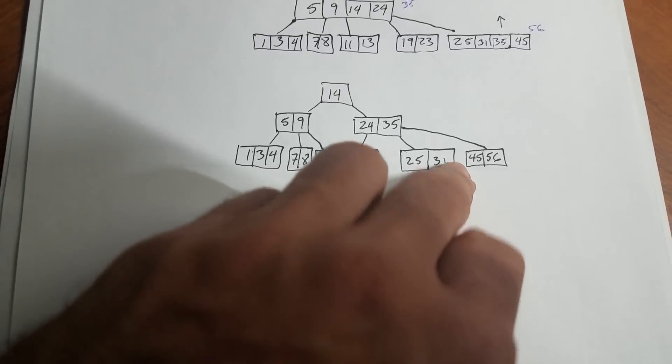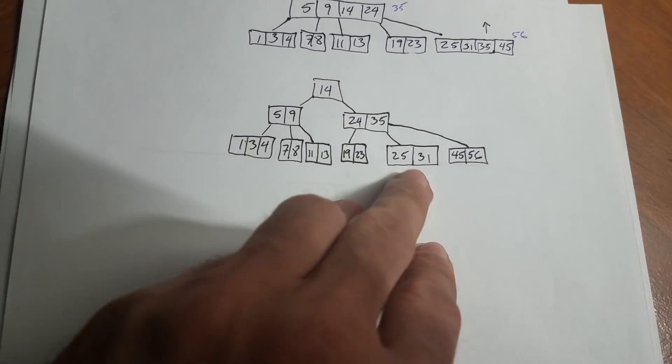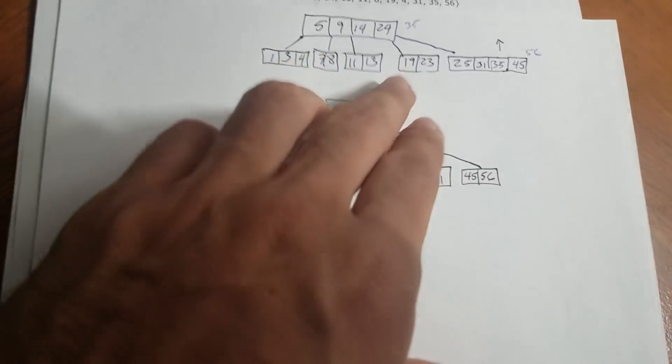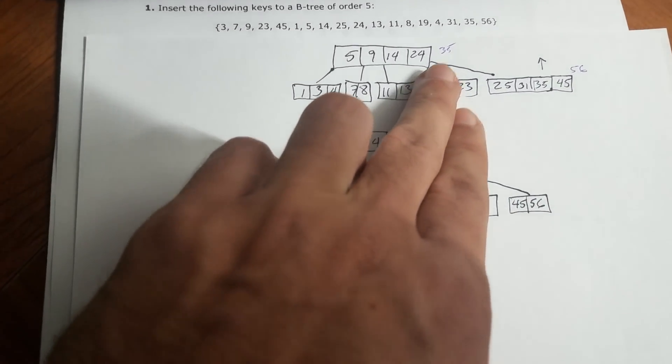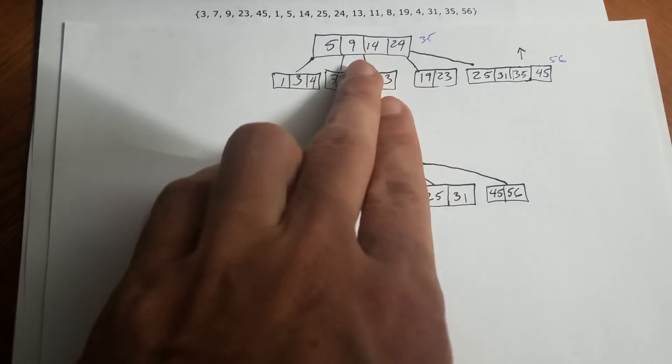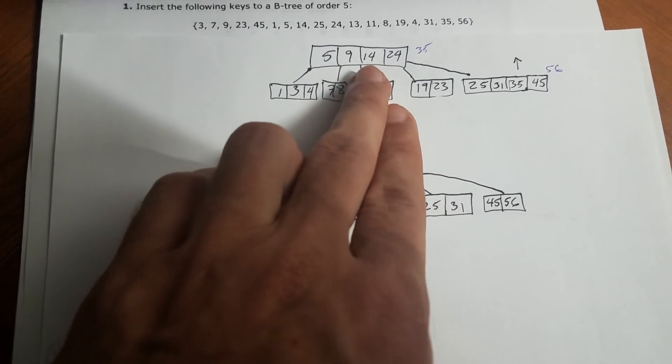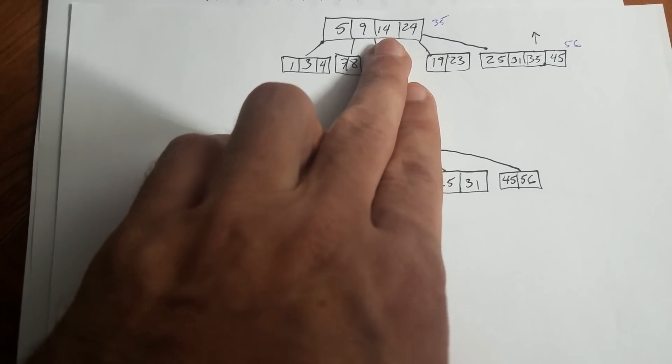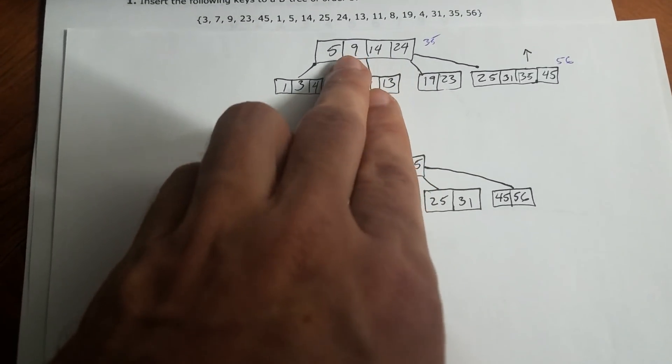Now, what do we do with this 35 here? With this 35, we promote it to the top. Now, here we're going to have more than four. So we're going to take the middle one, which is 14. And we're going to split in two. So 14 is going to be the root.